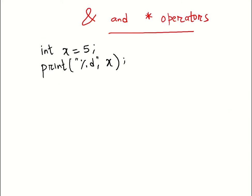Now let's talk about two important operators used very frequently with pointers. The first is the ampersand (&), called the address-of operator. The second is the asterisk (*), called the indirection operator.